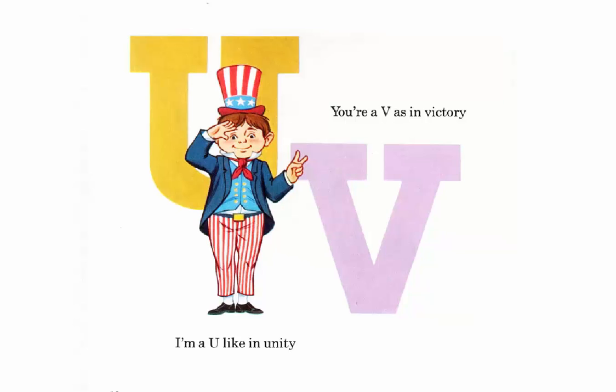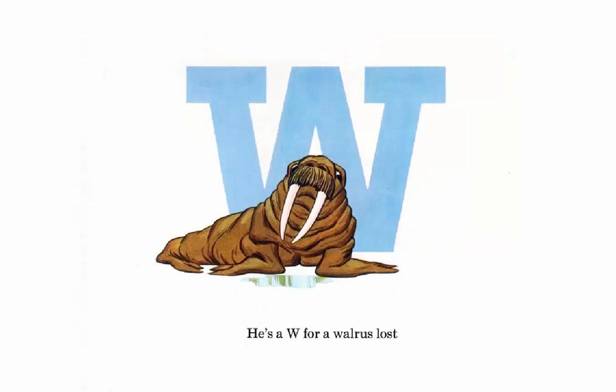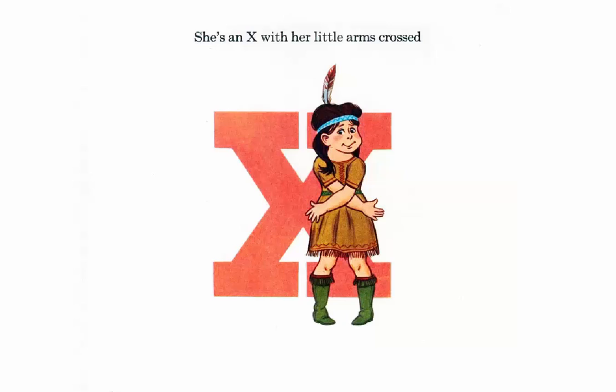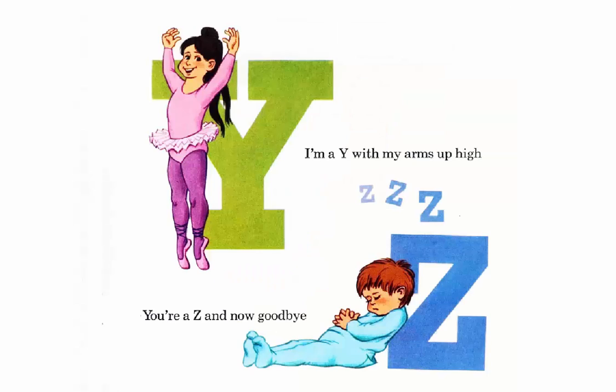You're a V as in victory. He's a W for a walrus lost. She's an X with her little arms crossed. I'm a Y with my arms up high. You're a Z.